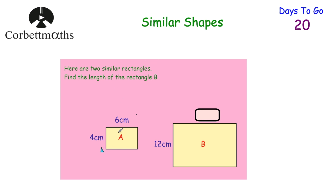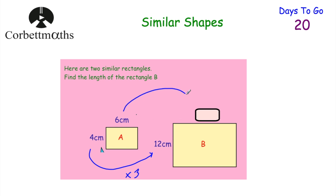Let's start off by looking at similar shapes. Here we've got two rectangles and they're mathematically similar, which means one is an enlargement of the other. Rectangle A has a length of 6 centimetres and a width of 4 centimetres, and rectangle B has a width of 12 centimetres. The width of B is 3 times larger than A, so the scale factor of enlargement is 3. Therefore the length of rectangle B is 6 multiplied by 3, which is 18 centimetres.